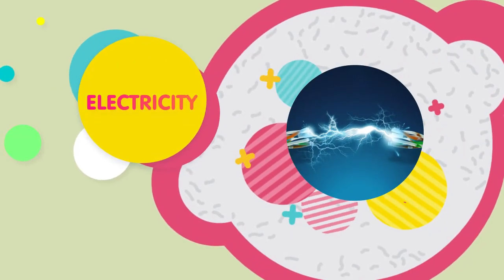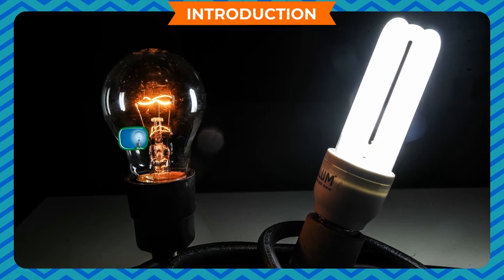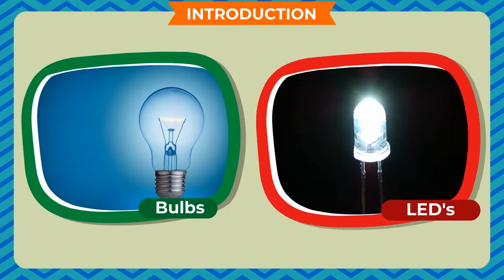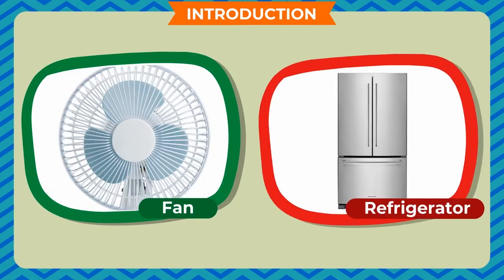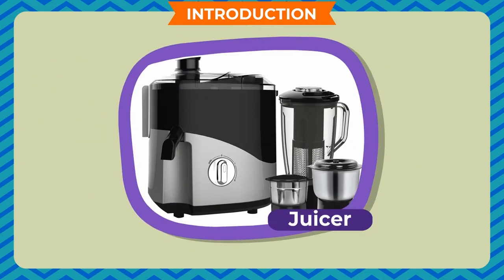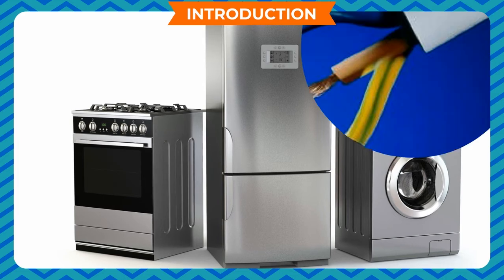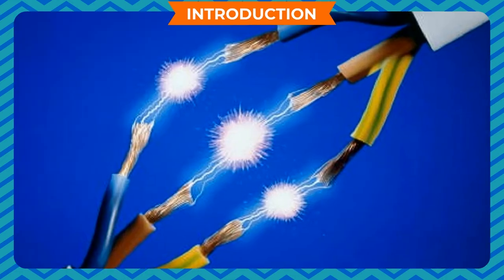Electricity. Introduction. You see electric bulbs, LEDs, fans, refrigerators, televisions, air conditioners, and juicers in your house. These are called electrical appliances because they all work when electric current flows through them.